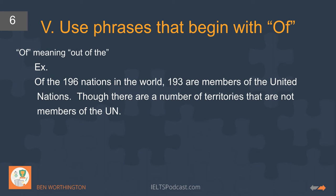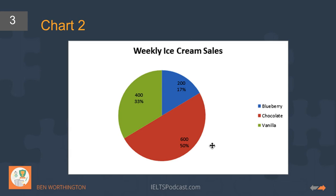We should use variety and not repeat 'of' excessively. For example, don't say: 'Of the ice cream sold, half was chocolate; of the ice cream sold, a third was vanilla.' That repetition isn't necessary — mix up your sentence structures instead.